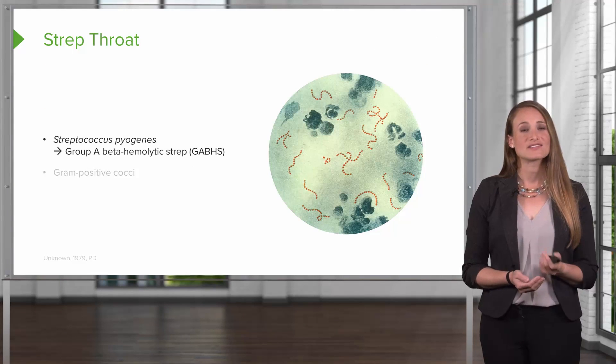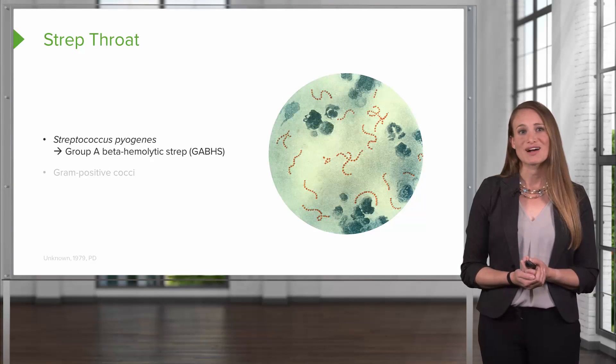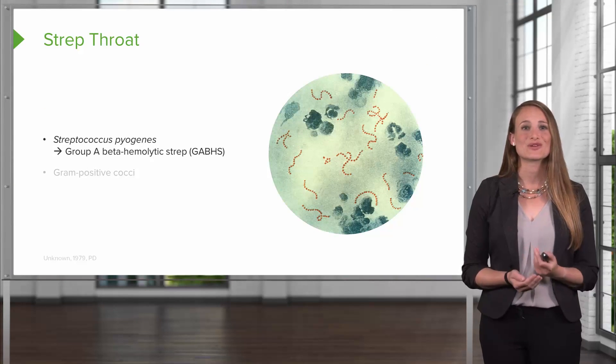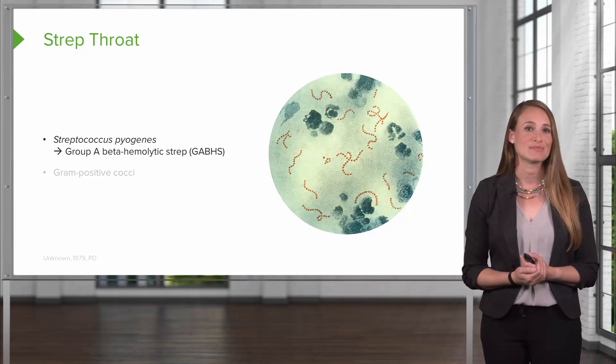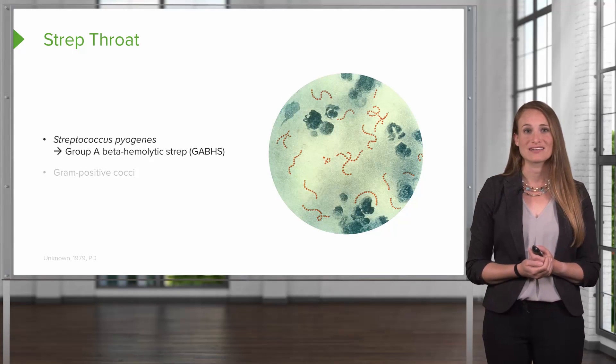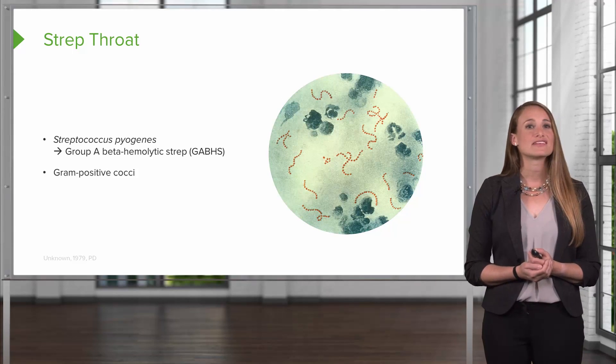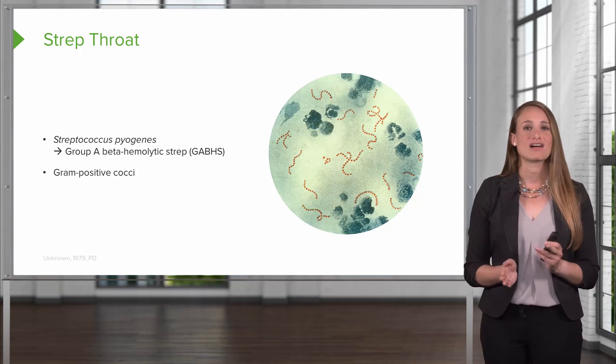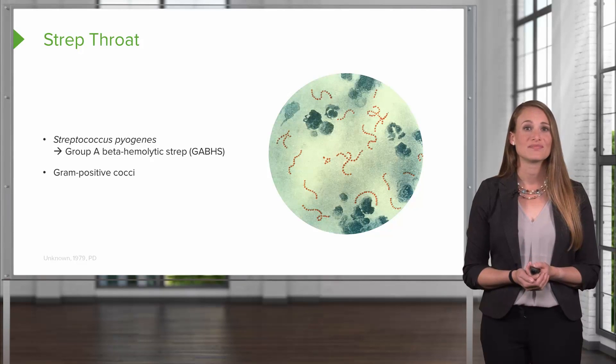Strep throat is caused by Strep pyogenes, which is a group A beta-hemolytic strep, or GABHS. This is a gram-positive cocci that is present in chains.